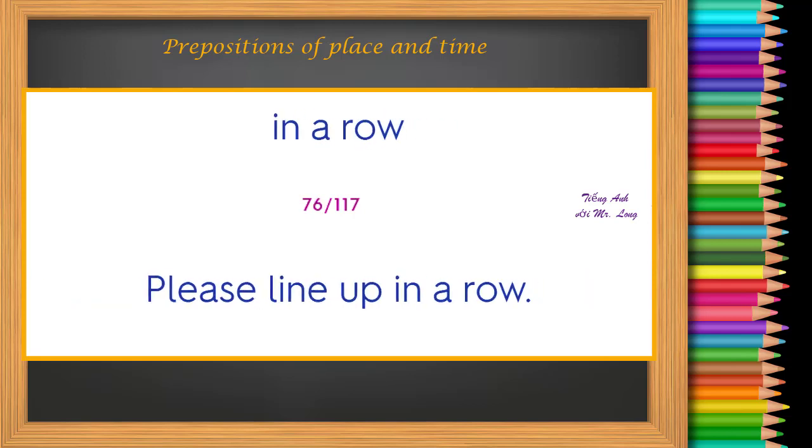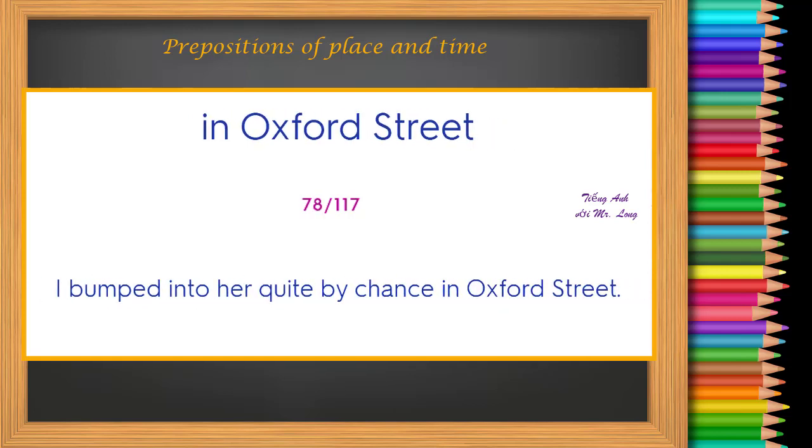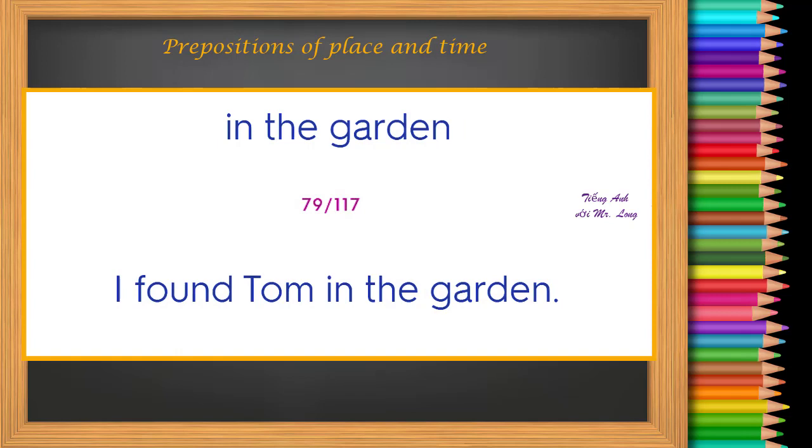In a row. Please line up in a row. In the solar system. Jupiter is in the solar system. In Oxford Street. I bumped into her quite by chance in Oxford Street. In the garden. I found Tom in the garden.